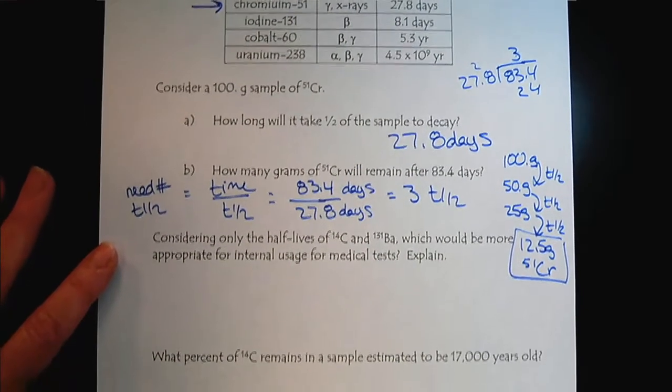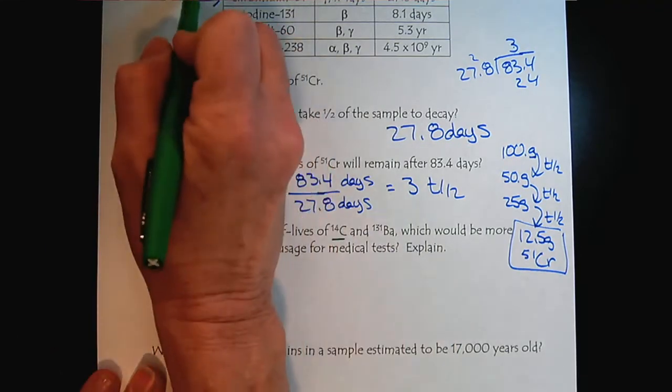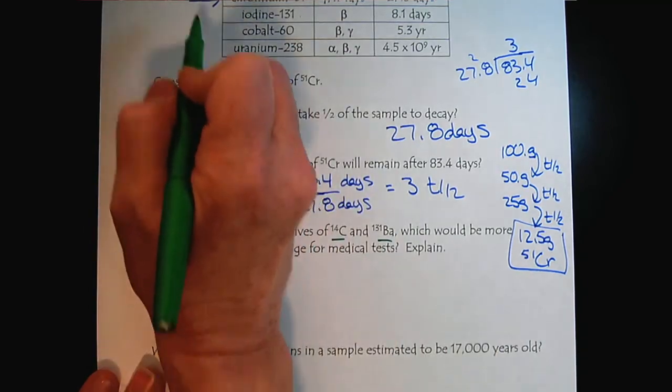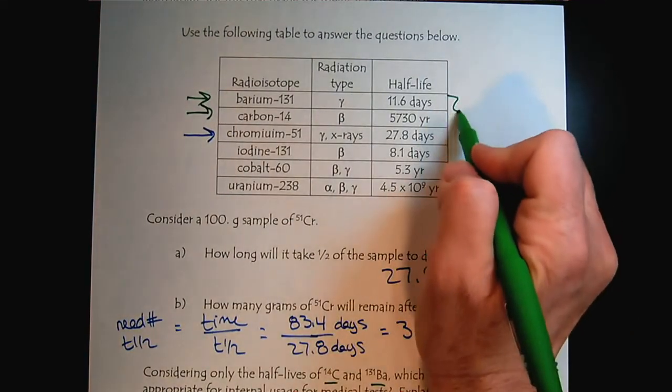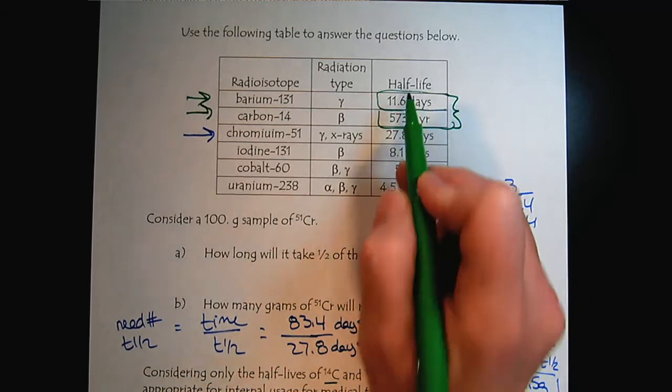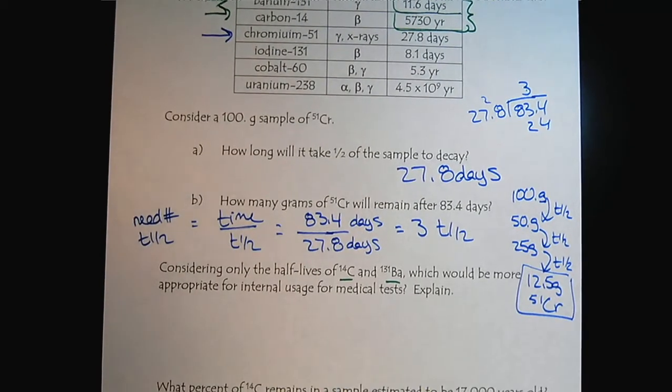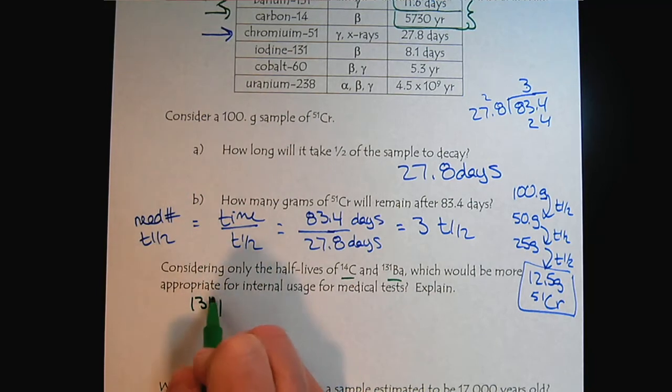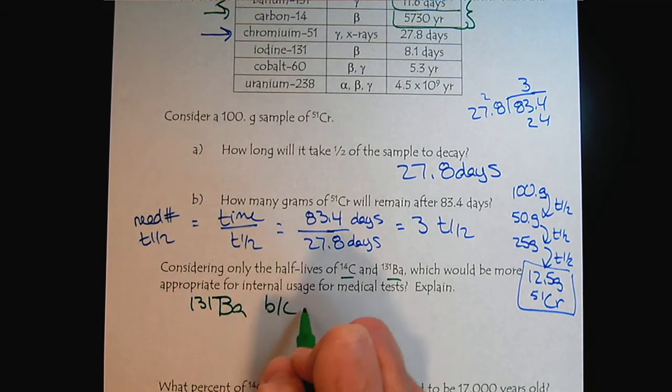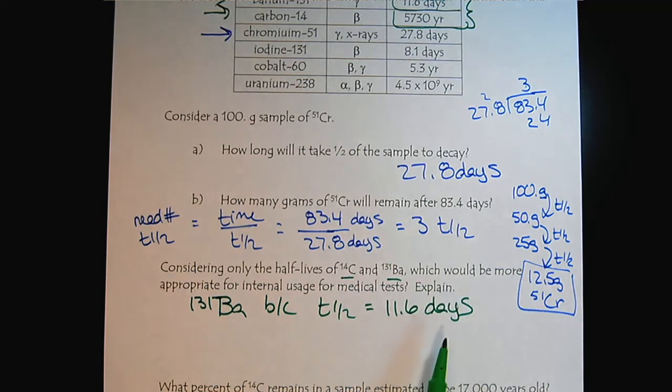Now let's look at this next question. Considering only the half-lives of, we'll do carbon 14 and barium 131. So let's go back up to our chart. So we're only going to compare the half-lives. So we have one that's in days and one that's in years. Which would be more appropriate for internal use in a medical test? Well, it would definitely be the barium 131 because the half-life is only 11.6 days.